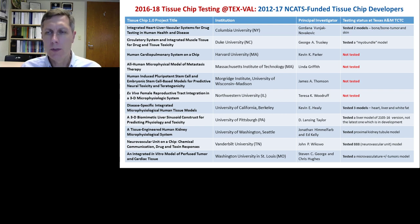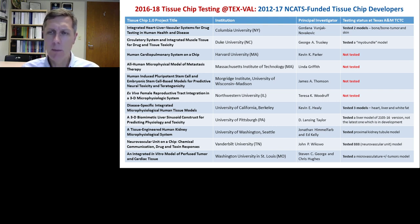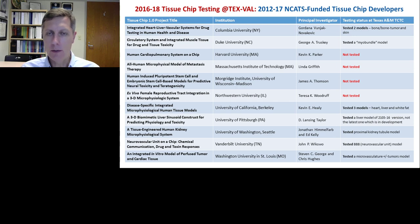The first thing we had to do was define what tissue chips are out there. NCATS specified that testing centers were only to work with NCATS-funded developers. In 2012, there was a first round of grants awarded — all information is available on the NCATS website. There is a diversity of institutions and projects. We reached out to all of them and ended up with about two-thirds of developers who were interested in working with us. One challenge is convincing technology developers to let a third party test their technology before it hits the real world.